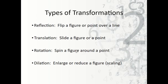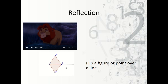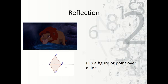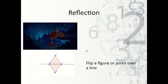Just a reminder of the different types of transformations. A reflection is a flip over a line. Translation is a slide. Rotation means it spins. And dilation or scaling means we're going to make it either bigger or smaller. Here's a reflection — you can see a triangle that flips over and goes this way. We also have Simba showing you what a reflection is as he looks into and sees himself in the water.